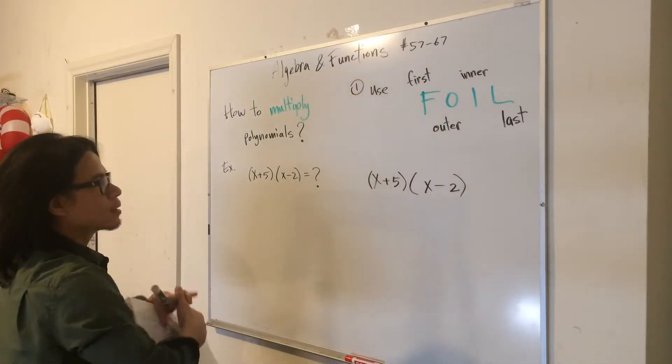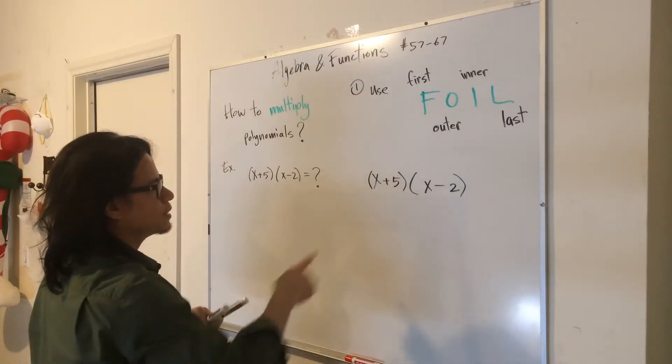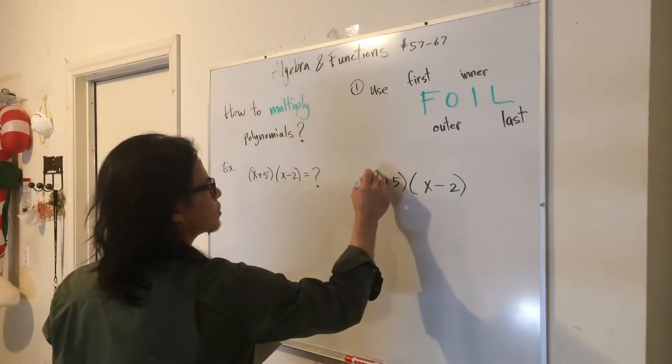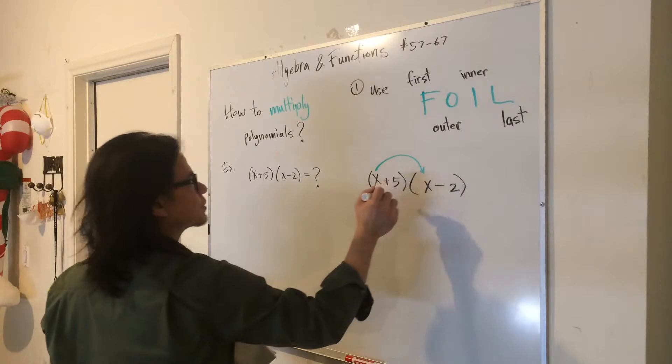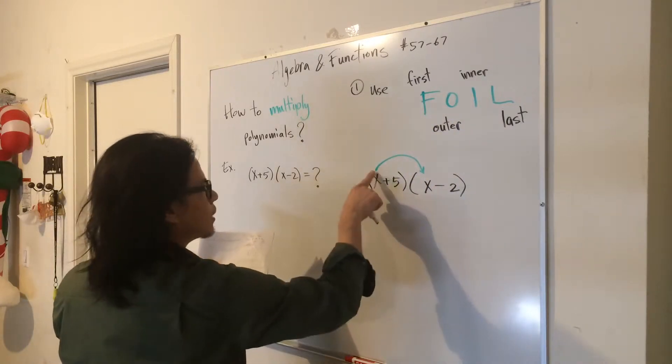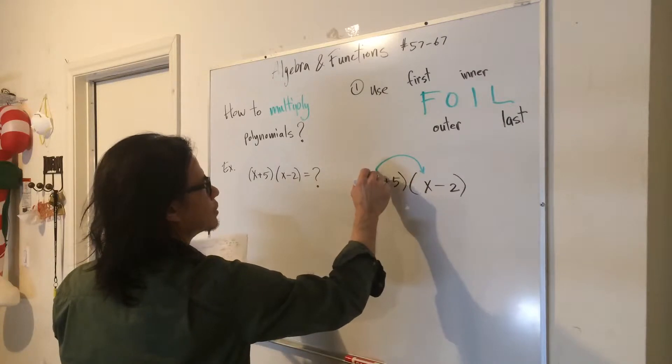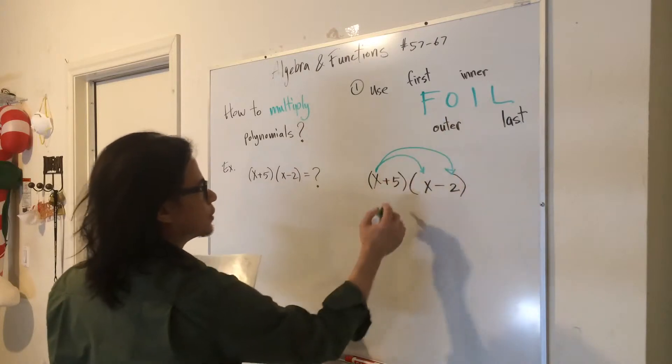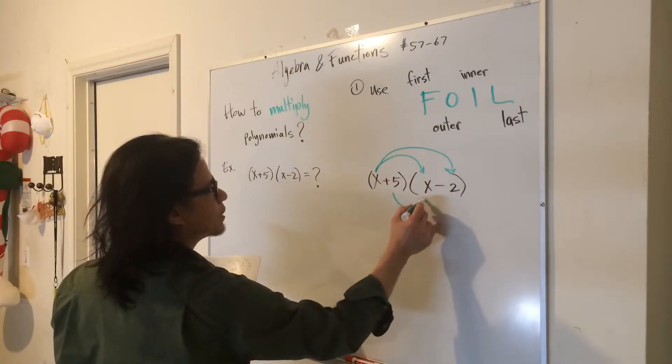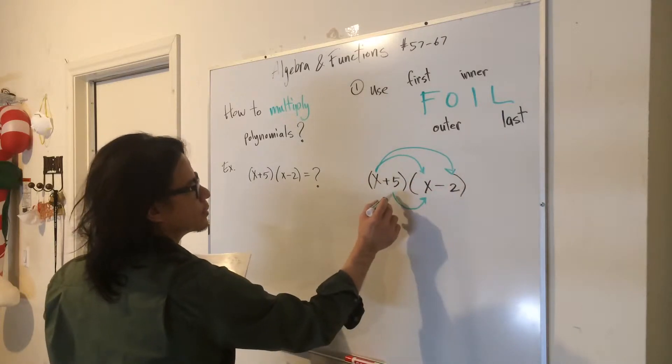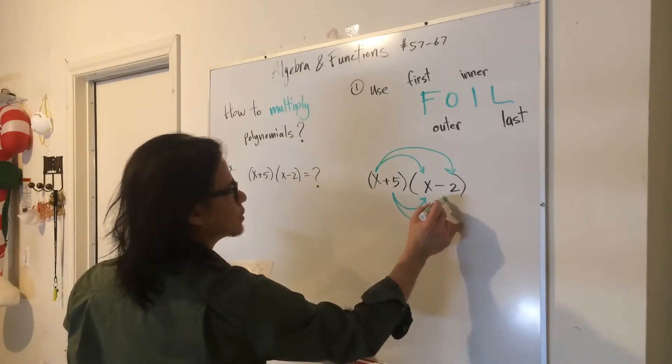So the first term is the x times x. We're going to multiply x times x. The outer term is x times negative 2. The inner term is the 5 times x. The last term is the 5 times negative 2.